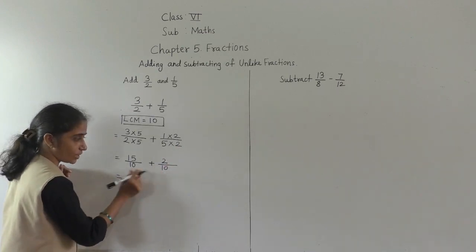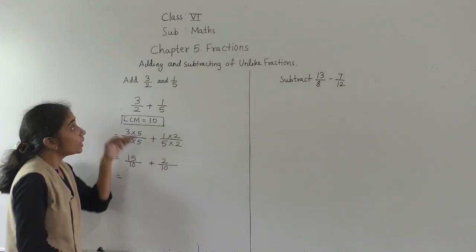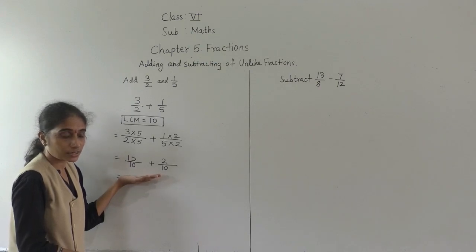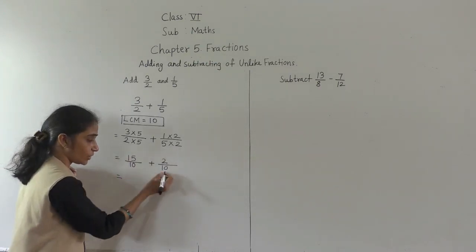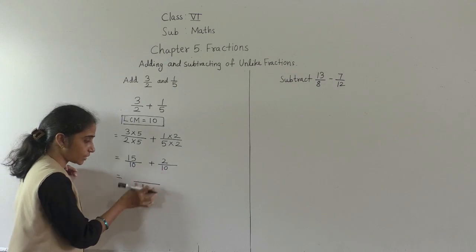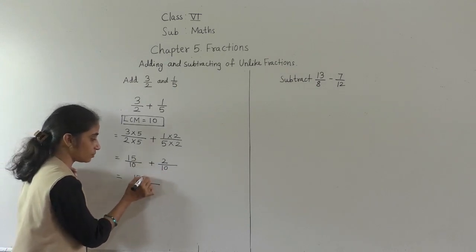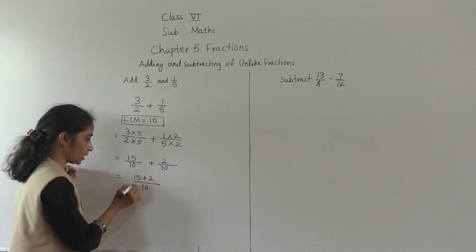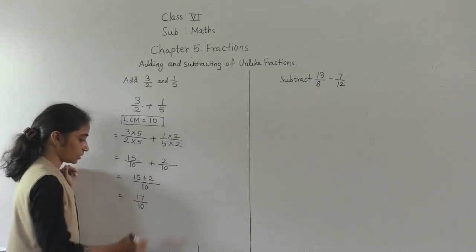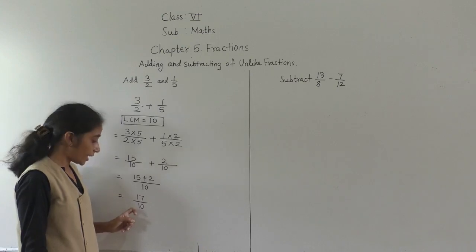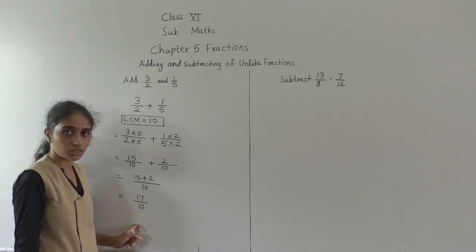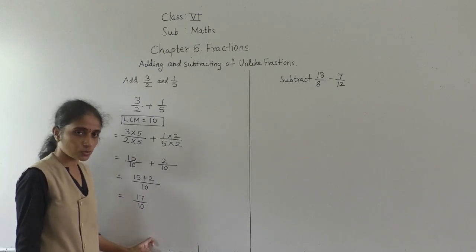Denominators are now the same — we converted the unlike fractions into like fractions by finding LCM. Write the denominator once and add the numerators: 15 plus 2 is 17. So the answer is 17 upon 10. We can also convert this into a mixed fraction: 10 ones are 10, remainder 7, giving 1 and 7 upon 10.